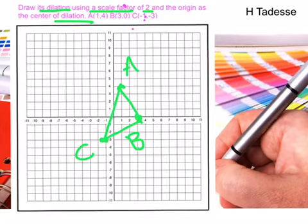And for A prime, you have to multiply by 2. So 1 times 2 equals 2, so (2,8). That could be A prime.